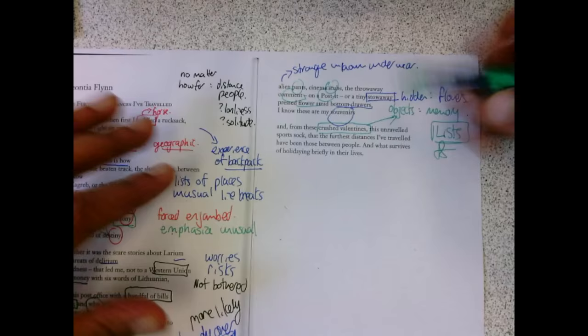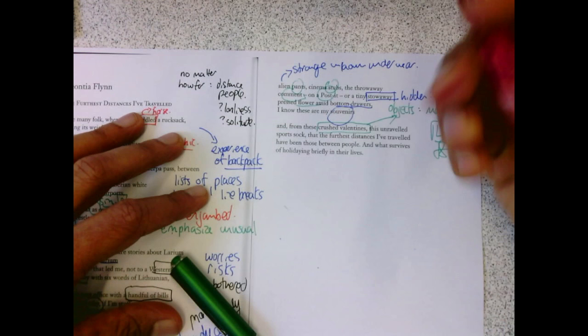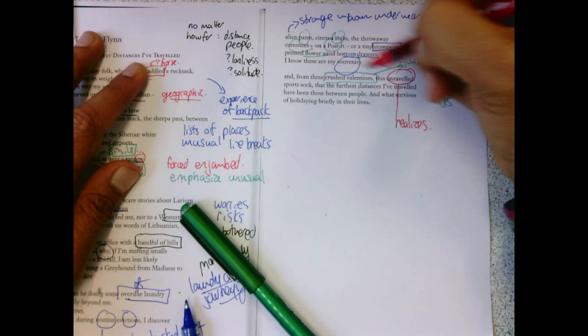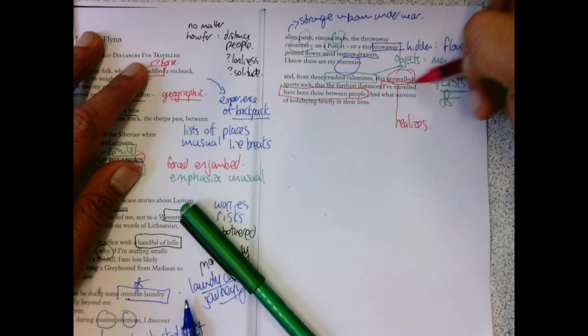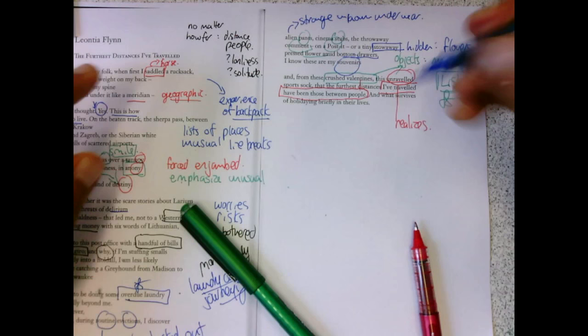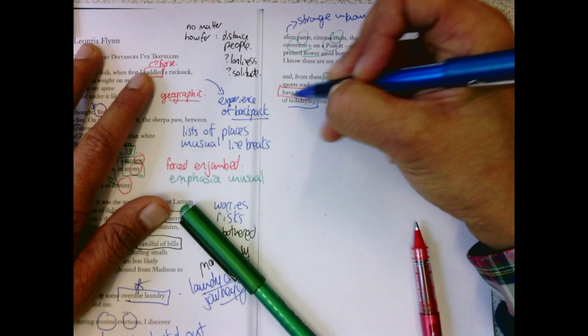This unraveled sports sock. So just as the sports sock unravels, so does her thought process. Where she realizes that, you know what, the furthest distance I've traveled has been those between people. It's not Zagreb or Siberia or anything. It's actually people. And I get this from these crushed valentines, these little love letters. Nothing's here with me anymore except these. And all that's, and these things are what survive of holidaying briefly in their lives.